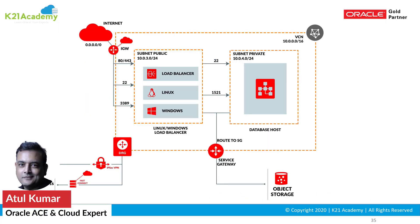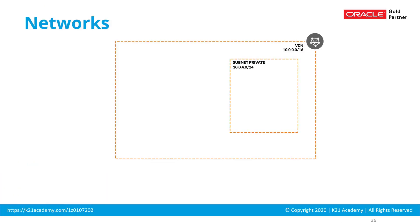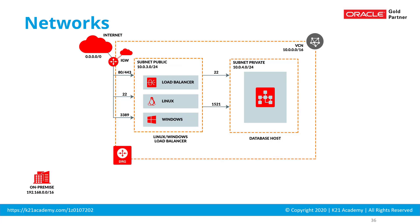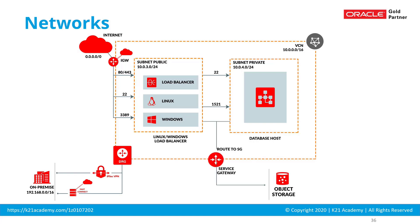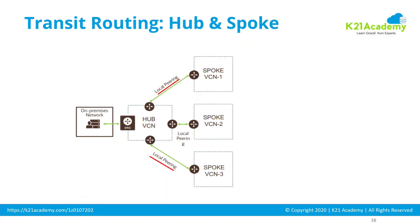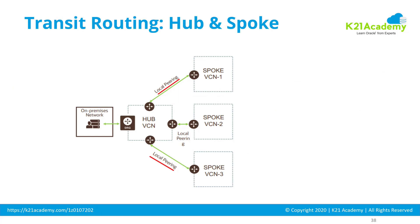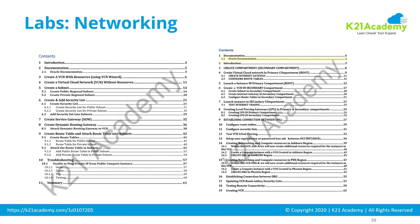That's Atul Kumar from team K2N Academy talking about networking, where you should be learning: virtual cloud network, different types of subnets — public and private — security lists as firewall, internet gateway to connect to the internet, DRG to connect to on-premise via IPsec VPN tunnel or fast connect, and service gateway to connect to object storage. You should also learn about public and private load balancers, advanced topics like transit routing with hub-and-spoke, local peering within a region, and remote peering across regions — plus all the hands-on labs.